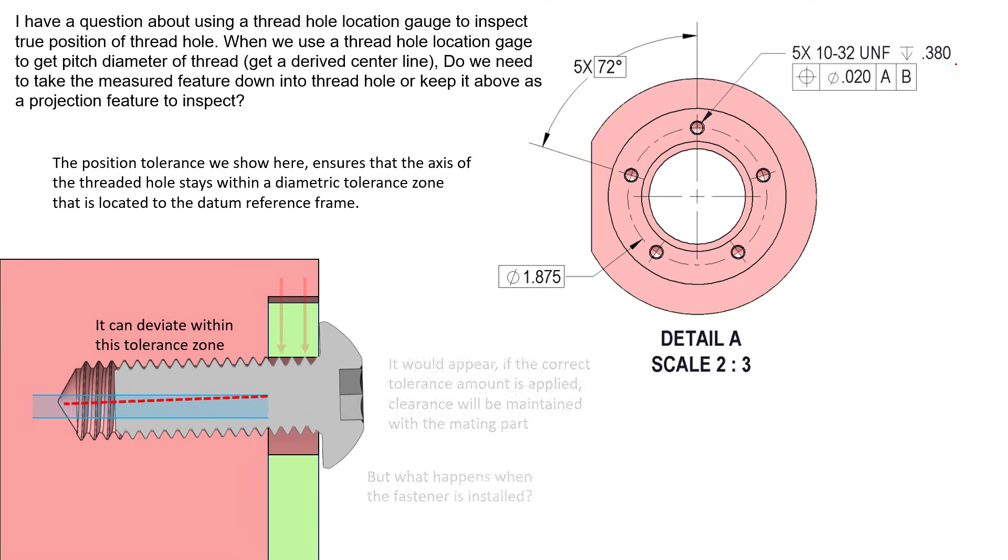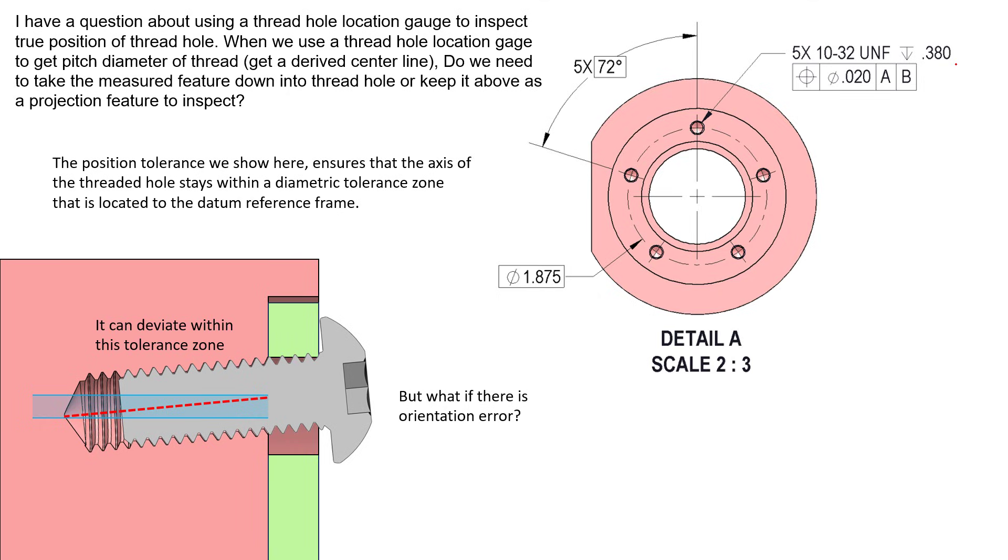What's interesting though is if there's any sort of orientation of this axis, something interesting happens to the fastener. The axis of that fastener keeps going. It keeps extending outward. What might happen is you'll have an interference between the fastener and that clearance hole. If there's any orientation error, that axis could be projected well beyond this tolerance zone and we'd still pass, because the specification and rules say it's just the axis of the threads, the female threads that we see here. It's not the axis as it were to project above this red surface here.